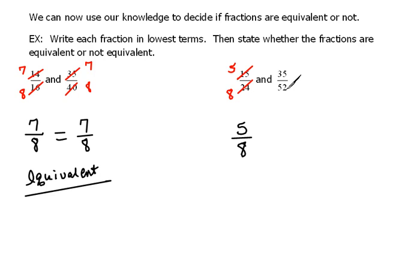Now, what about the 35 over 52? Well, 2 won't go into them. 3 will not go into them. 3 plus 5 is 8, and that's not divisible by 3. Remember our divisibility tests.